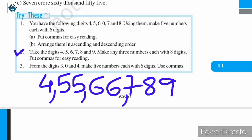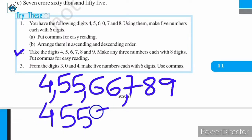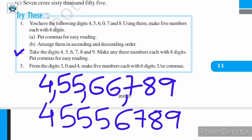In a similar manner, you can make another number: four, five, five, five, six, seven, eight, nine. Here I just repeated the digit five. Again, I have an eight-digit number. Putting the commas for easy reading, this reads as four crore, fifty-five lakh, fifty-six thousand, seven hundred eighty-nine. It is not necessary that you begin with four.